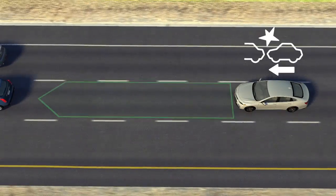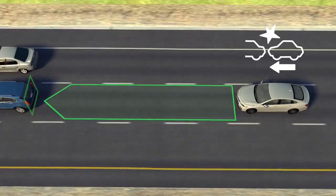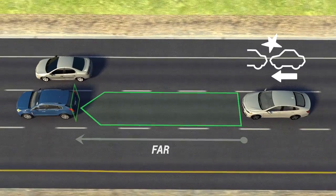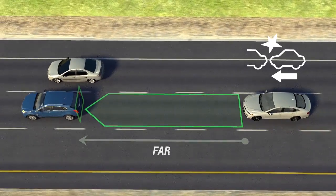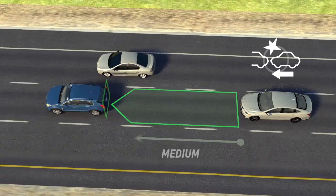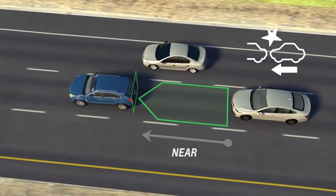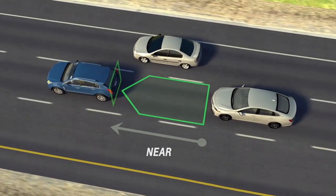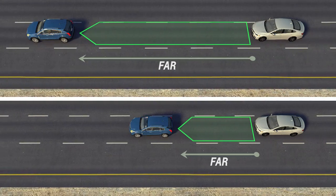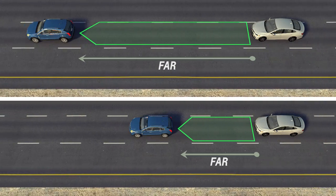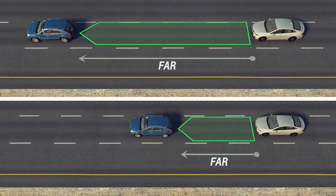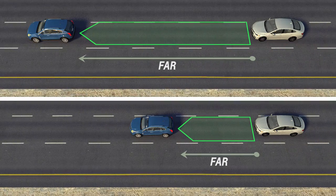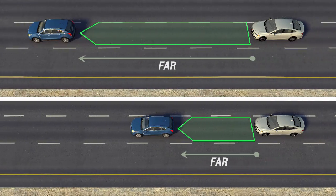Unlike regular cruise control, Adaptive Cruise Control Advanced features a following gap button on the steering wheel to let you select either a far, medium, or near following time between you and a vehicle ahead you are following. For each setting, you will follow at different distances. For instance, you'll follow at a longer distance when traveling at higher speeds than you would at lower speeds.